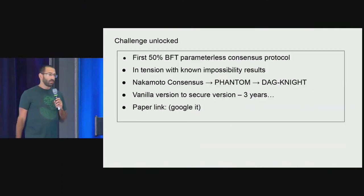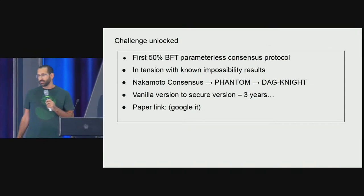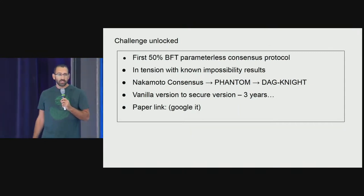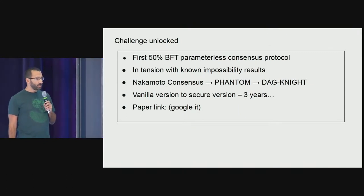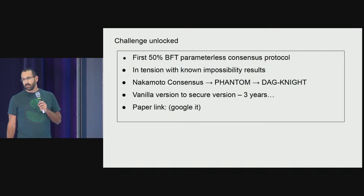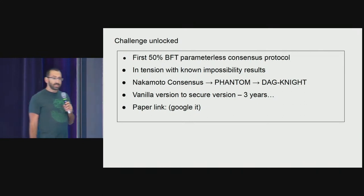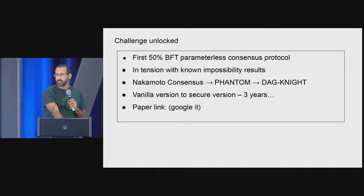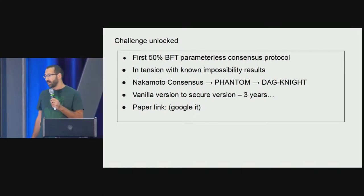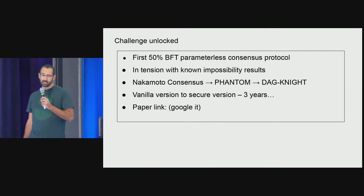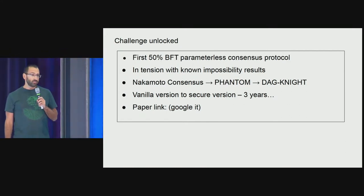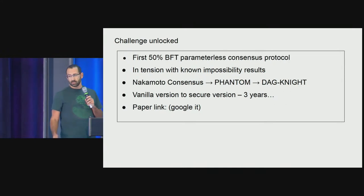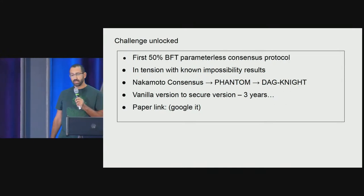14 years ago today, Satoshi released his Bitcoin white paper, and since then I developed the hobby of devising alternative consensus protocols based on proof of work. It started with Ghost Protocol, Spectre, and Phantom Ghost Dad.